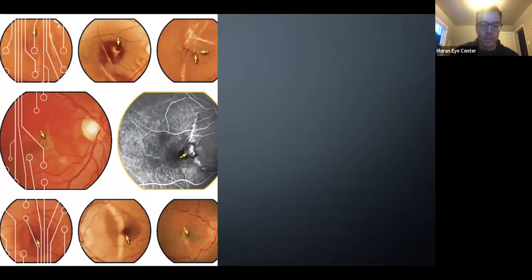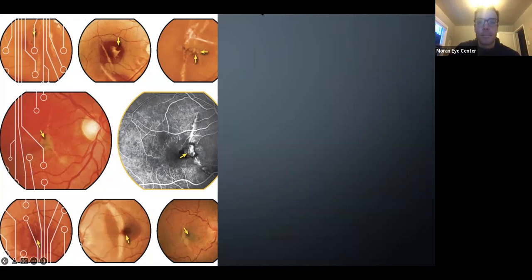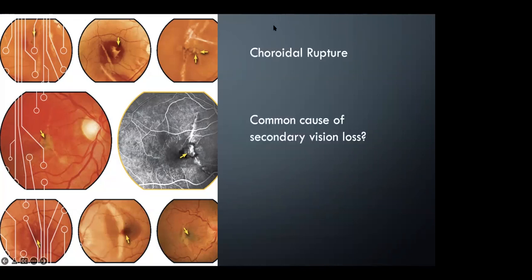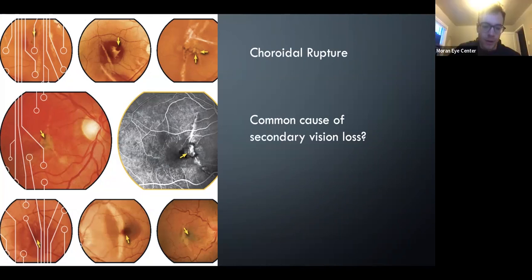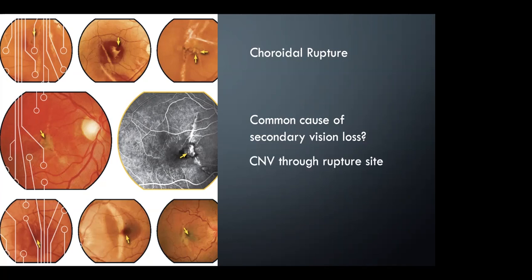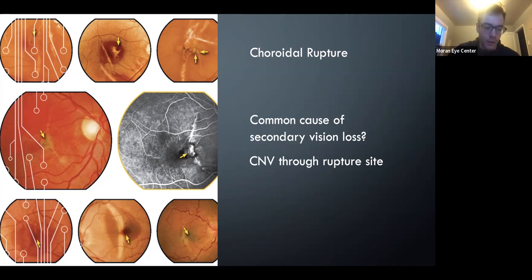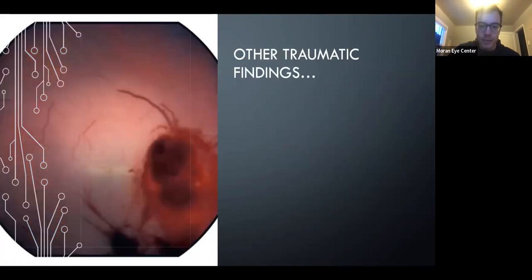Here's another type of trauma that's actually pretty common. This is going to be blunt trauma — choroidal rupture. The most common cause of secondary vision loss after choroidal rupture is CNV. I think most likely they'll ask you to recognize the choroidal rupture and then answer something about CNV.